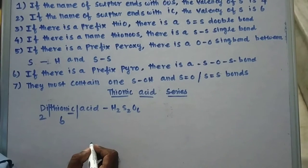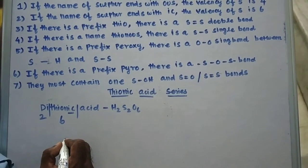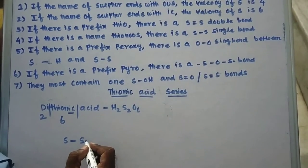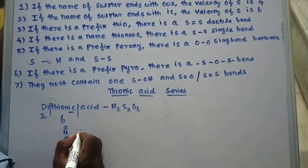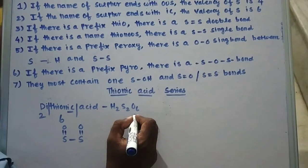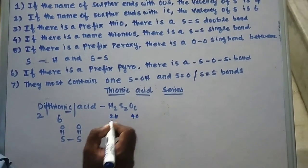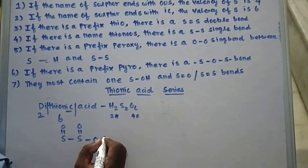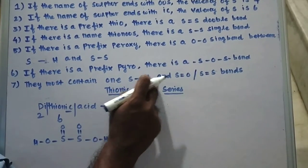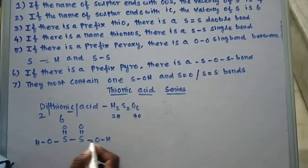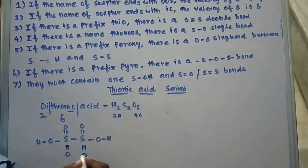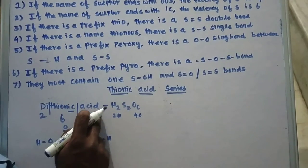For dithionic acid, H₂S₂O₆: first write the basic skeleton containing an S–S single bond. There must be an S=O bond on each sulfur. The remaining counts are 4 oxygens and 2 hydrogens. There must be an OH on each sulfur. Remember: they must contain one S–OH and one S=O or S=S bond. Two oxygens are still remaining, giving a double bond O and double bond O on each sulfur. This is the structure of dithionic acid, formula H₂S₂O₆.